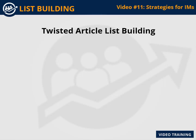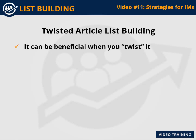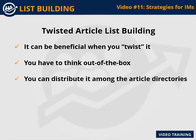Twisted Article List Building. We are not discussing common article writing but article marketing, which can be beneficial when you twist it. If you are a good writer you can write for your brand. To write a good quality article you have to think out of the box. Your article content should start and end with the most powerful tips, and you can include subheadings, squeeze page links, high quality content, and avoid useless content. Your article should be informative, and you can distribute your content among article directories.